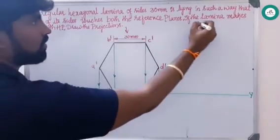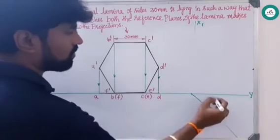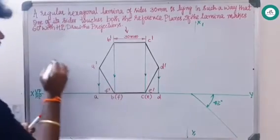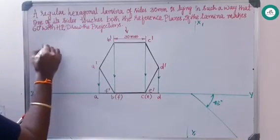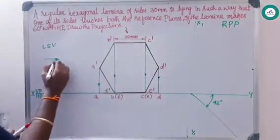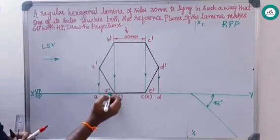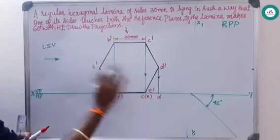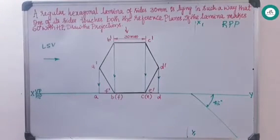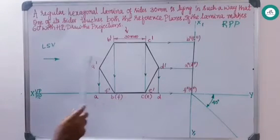Draw the x1y1 line. From the intersection of x1y1 and XY, draw a 45-degree line. This is the left side view on the right profile plane. From the left side view, a-dash, b-dash, f-dash, and c-dash are visible, while d-dash is not visible. Project these points and name them accordingly.